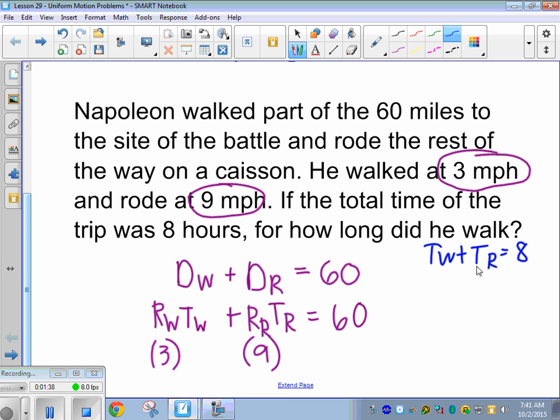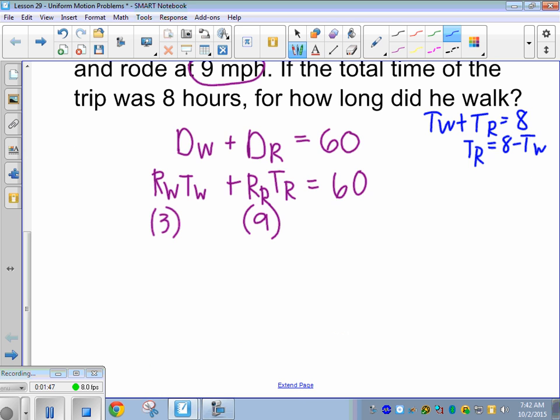And we solve for either one of those. So I'm going to subtract the T_w. All right. So T_r is 8 minus T_w, which means I'm going to keep T_w in my equation, and I'm going to replace the T_r with 8 minus T_w. And we're going to solve it.